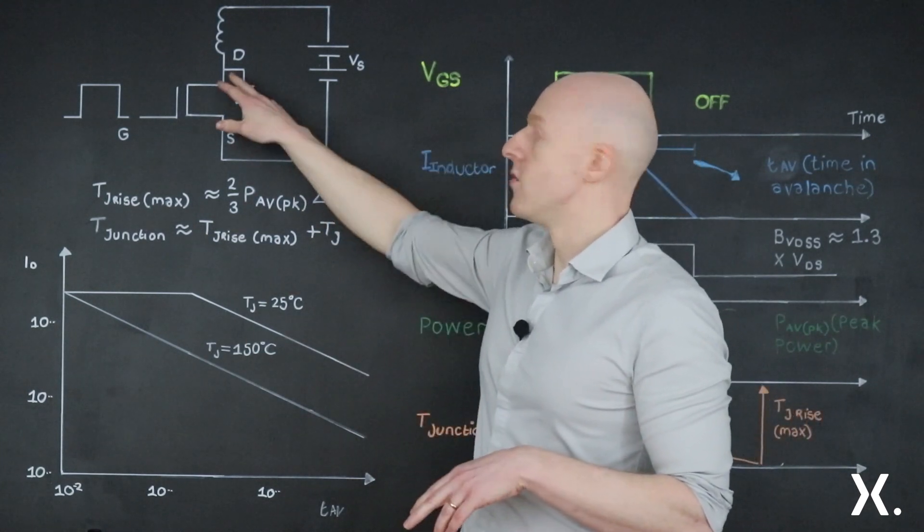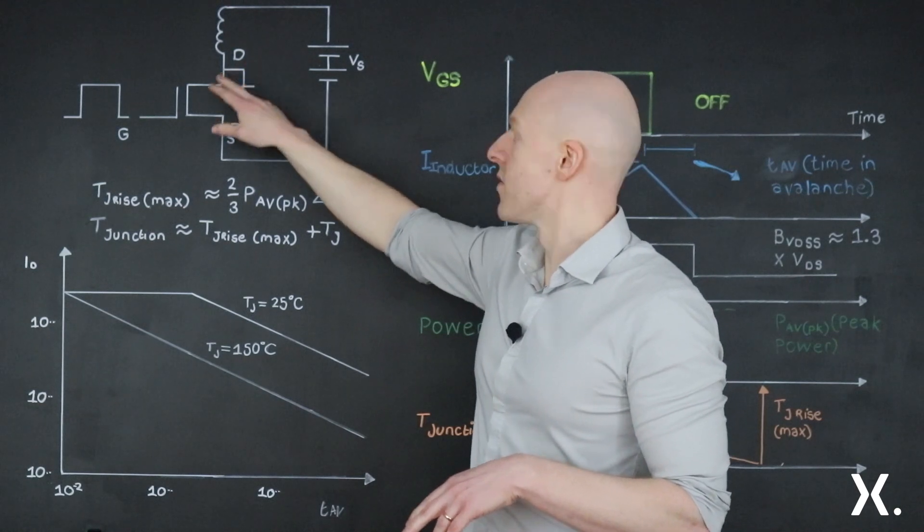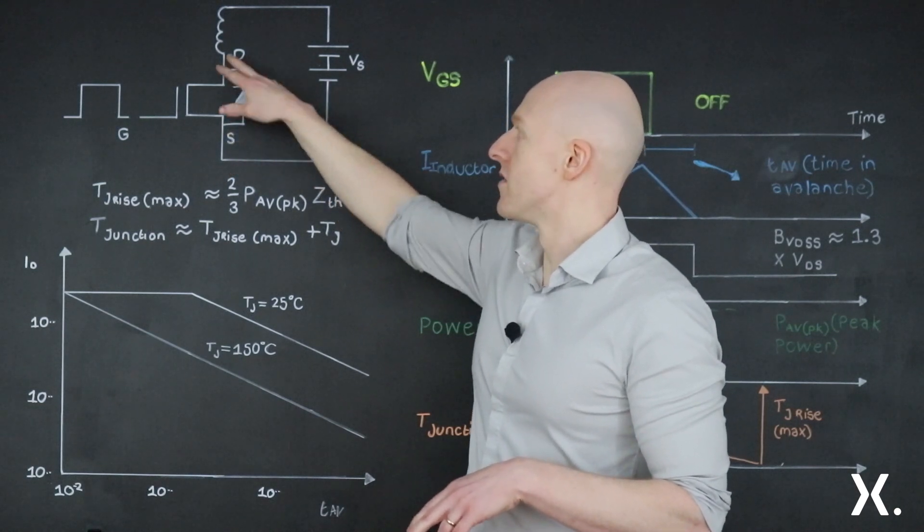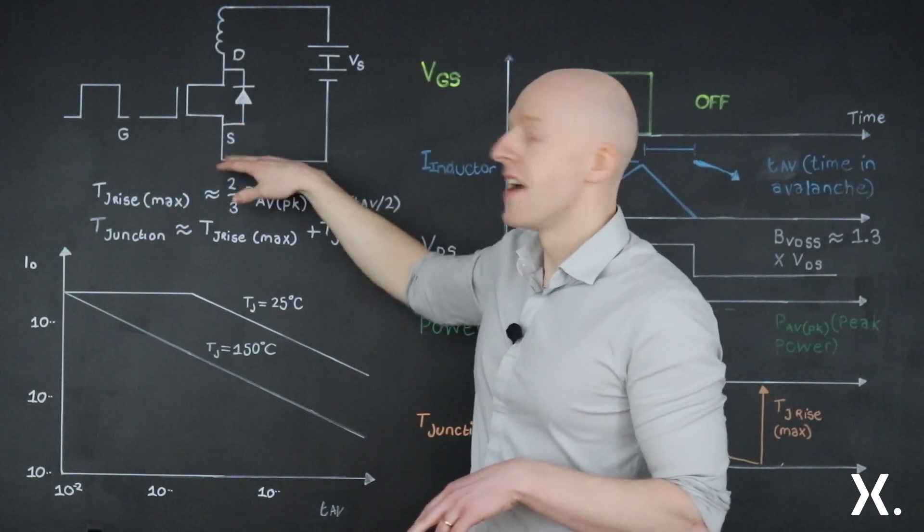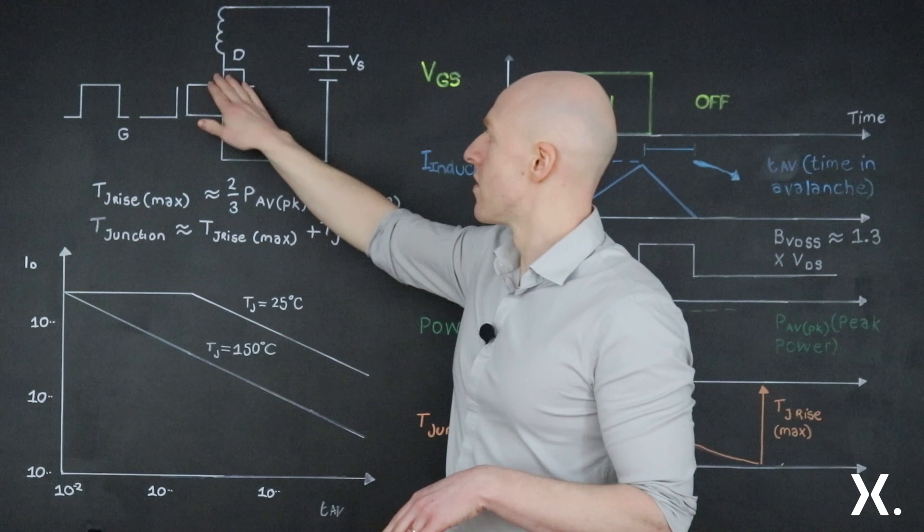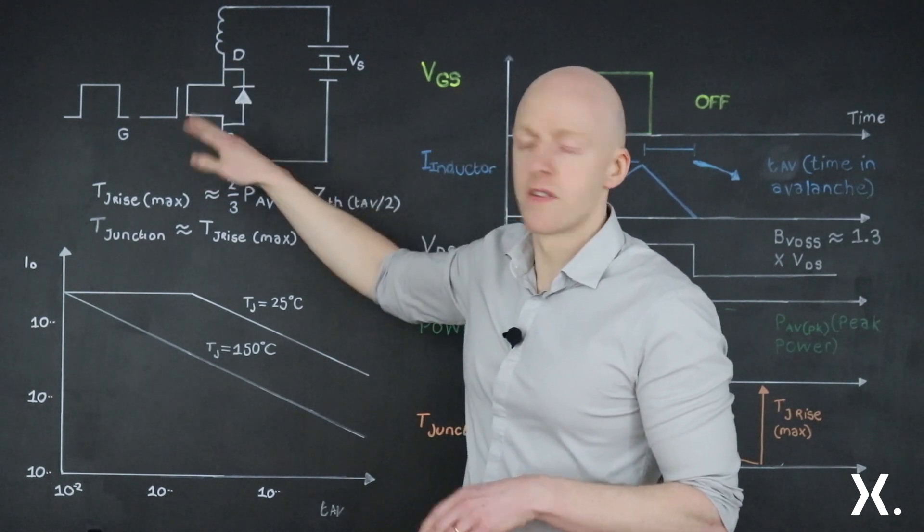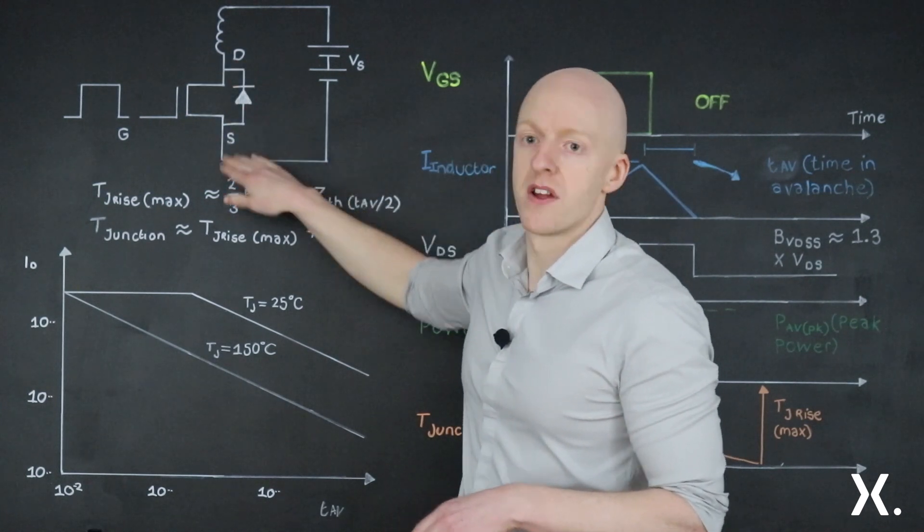Now what happens when you reach the breakdown voltage of this diode is that any current will flow in reverse through the diode. And this is what's known as avalanche or avalanche conduction. So no longer are you flowing current through the channel, you're flowing reverse through the body diode.